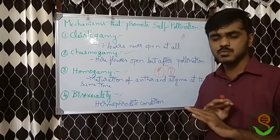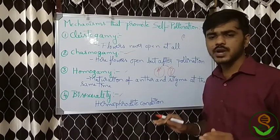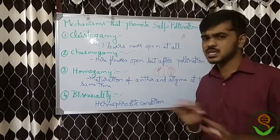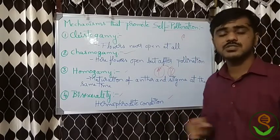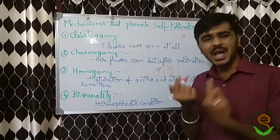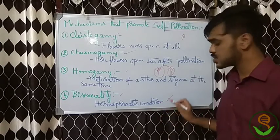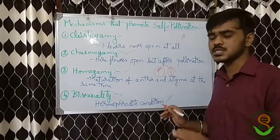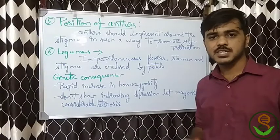Another condition is bisexuality. As mentioned, the hermaphrodite condition is most common in plants and must be present for self-pollination, because when both male and female parts are together in the same plant, the maximum possibility of self-pollination takes place. The hermaphrodite condition must be present to promote self-pollination.